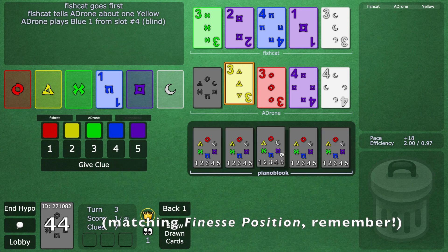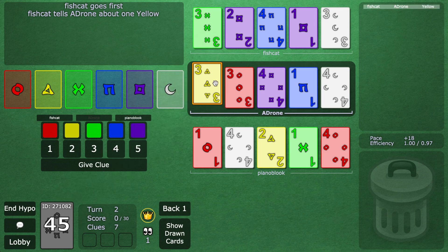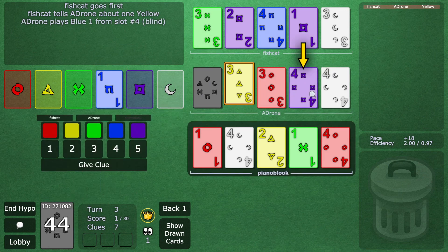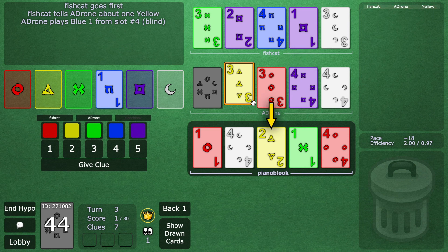Adron will play slot three, and now it's Pianobluc's turn. He has to think, what on earth just happened to make Adron, in response to a yellow three being clued, playing his third finesse position? Well, he must have thought. He must have been tricked into thinking this is a shadow. Turns out, this card is still globally known as yellow two.